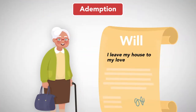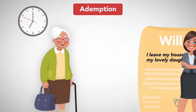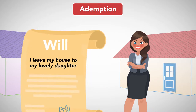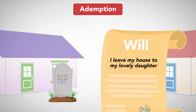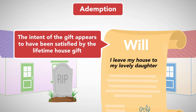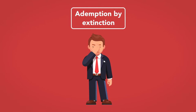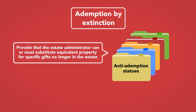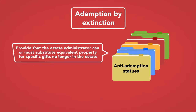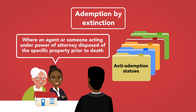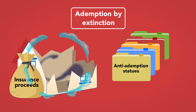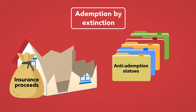Imagine, for example, that a testator leaves her house to her daughter in her will. Years later, the testator gives her current house to the daughter and buys a new house. When she dies, the provision will be subject to ademption by satisfaction because she gave her house to her daughter. Although she had another house when she died, the intent of the gift appears to have been satisfied by the lifetime house gift. Because ademption by extinction is viewed as a harsh outcome, in that the testator's intended gift is thwarted, some states have enacted anti-ademption statutes. These statutes provide that the estate administrator can or must substitute equivalent property for specific gifts no longer in the estate, particularly where an agent or someone acting under power of attorney disposed of the specific property prior to death. State law may also require proceeds from the sale of specifically gifted property or insurance proceeds from the destruction of the specifically gifted property to be given to the intended recipient of the gift.